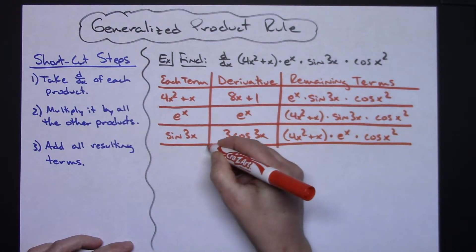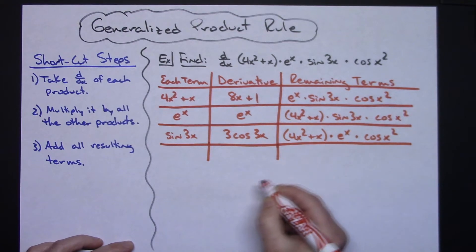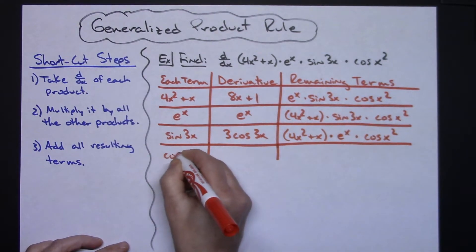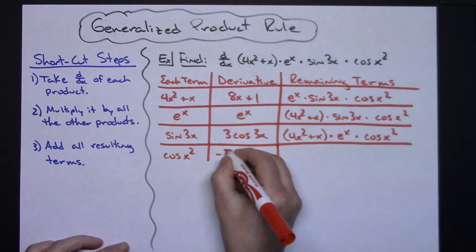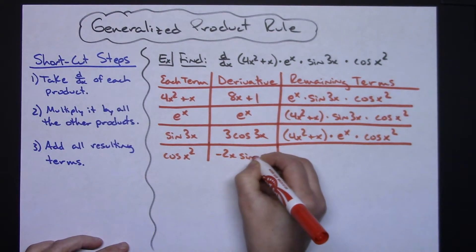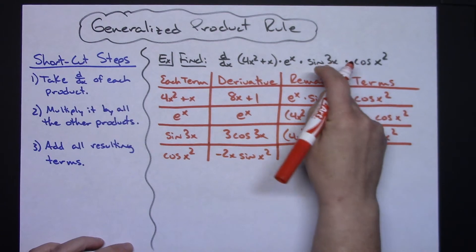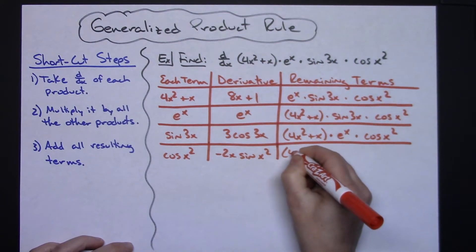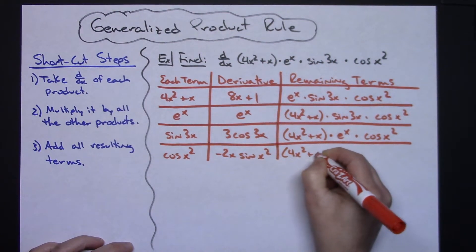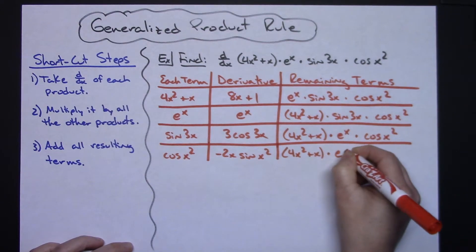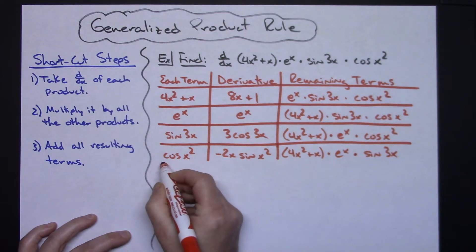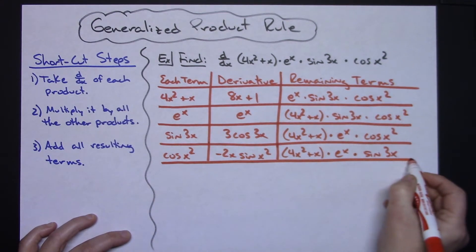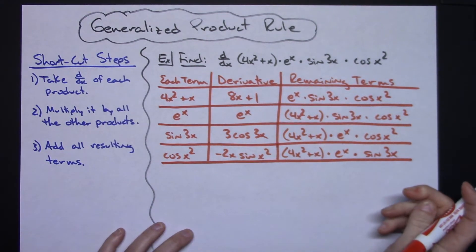And then I've got one more I've got to do. So my last one there would be the cosine of x squared. Taking the derivative there would be negative 2x sine x squared. All three remaining terms would be the 4x squared plus x times that e to the x times the sine of 3x. So that didn't take us very long. We've got it all written out.